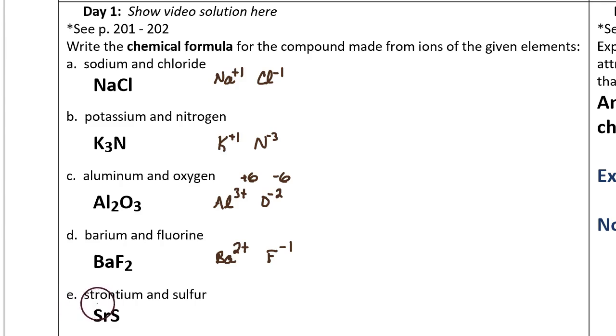Finally, question E: Strontium and sulfur. Strontium is in group 2A, it makes a positive two ion. Sulfur is in group 6A, so the sulfide ion has a negative two charge.